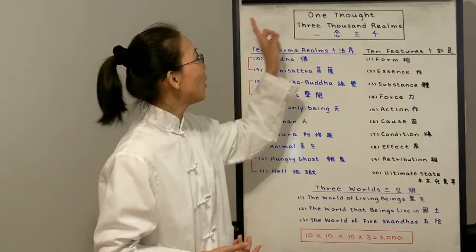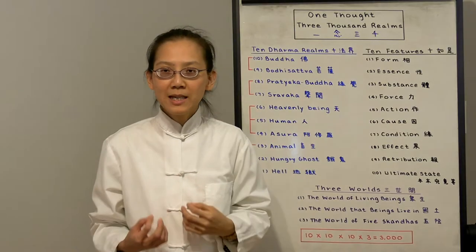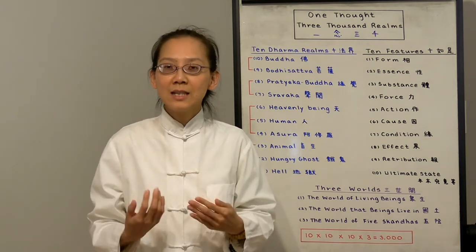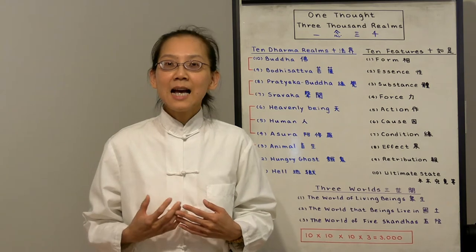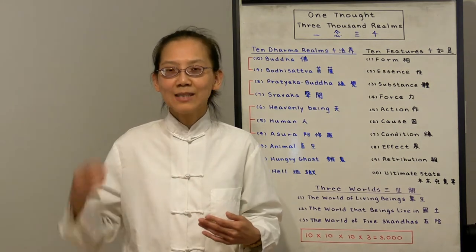Today we're going to talk about one thought, 3,000 realms, which means one instant of thought has 3,000 realms imminent within it. In this class we will talk about how our mind is the 3,000 realms.